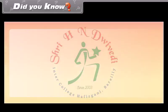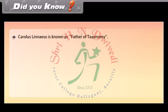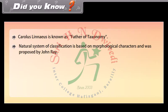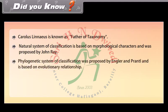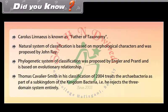Did you know? Carolus Linnaeus is known as the father of taxonomy. The natural system of classification is based on morphological characters and was proposed by John Ray. The phylogenetic system of classification was proposed by Engler and Prantl and is based on evolutionary relationships. Thomas Cavalier-Smith, in his classification of 2004, treats the archaeobacteria as part of a sub-kingdom of the kingdom Bacteria, rejecting the three-domain system entirely.